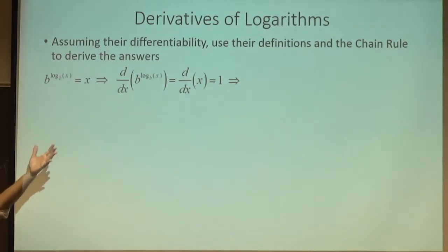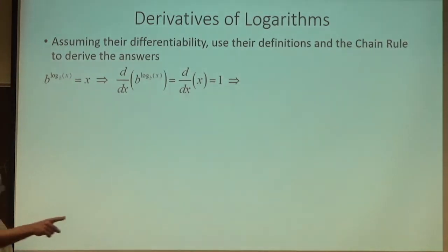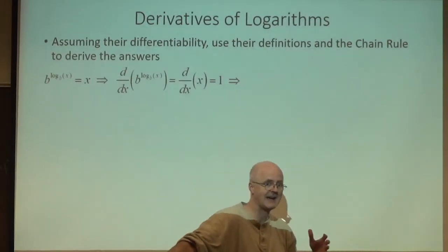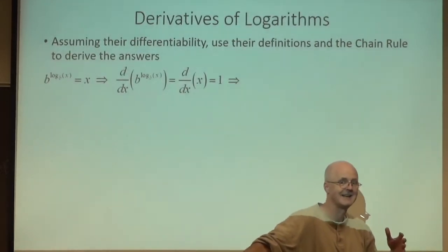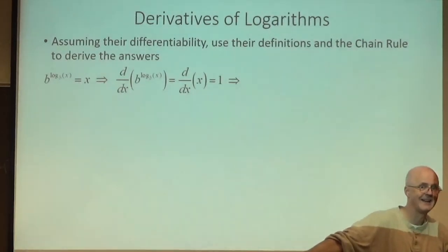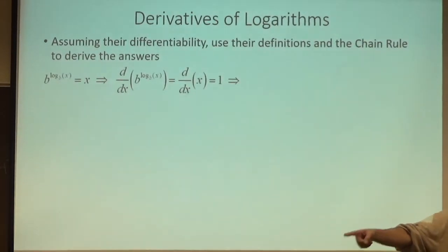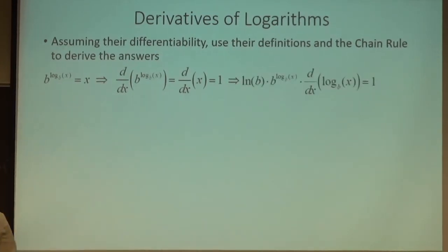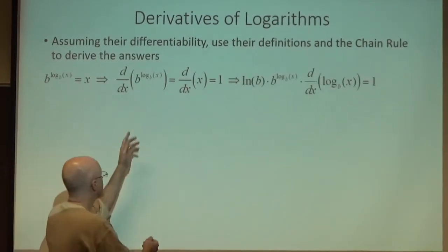So I take the derivative of the outside function, b to the x, which you already know, and you need to know possibly for the quiz. The derivative of b to the x is, say it loud, natural log of b times b to the x. And when b is e, natural log of e is 1, so the natural log part goes away.